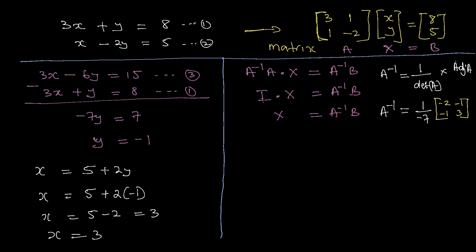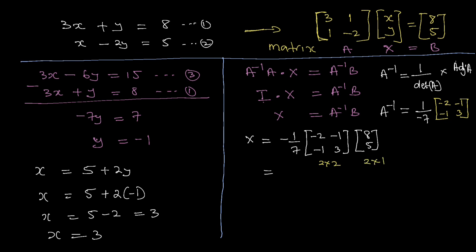Now compute x equals inverse of a times b. That is minus one over seven times the matrix [[−2, −1],[−1, 3]] times [8, 5]. This is a 2 by 2 matrix times a 2 by 1 matrix, so the product will be 2 by 1. Matrix multiplication is only possible when the number of columns of the first matrix equals the number of rows of the second.